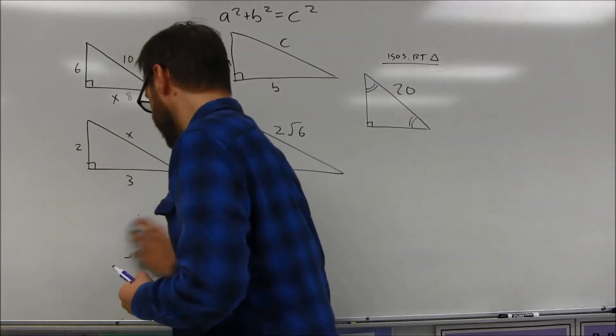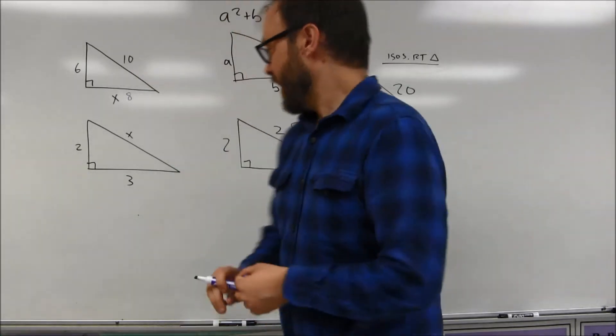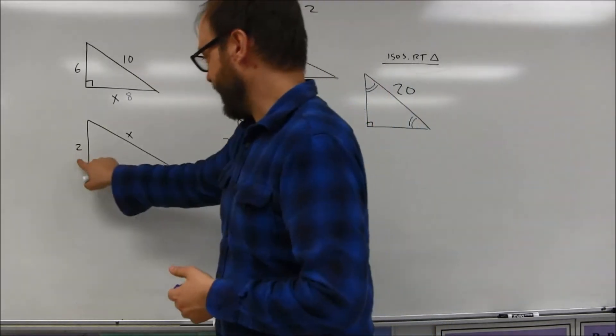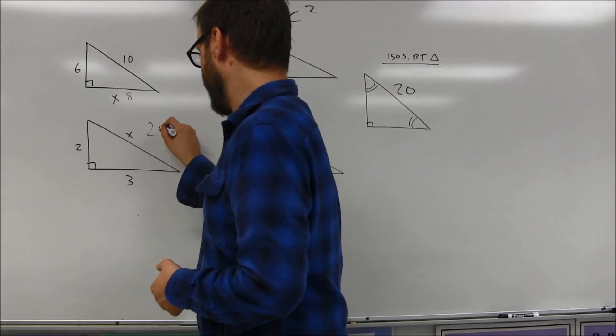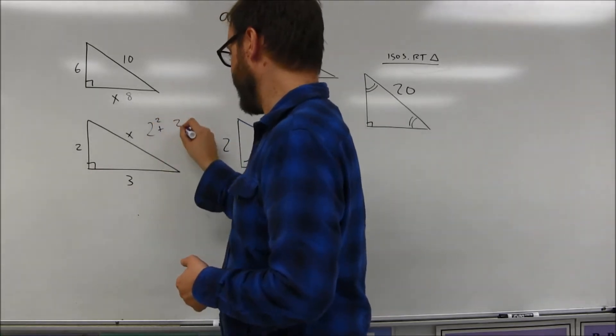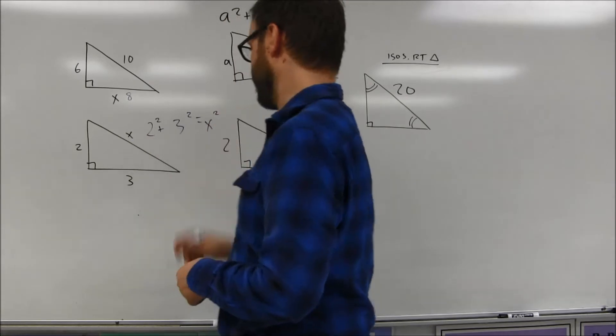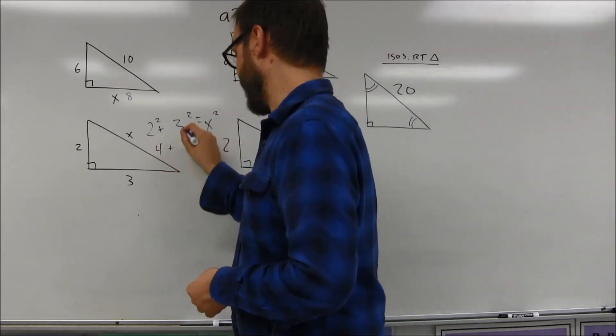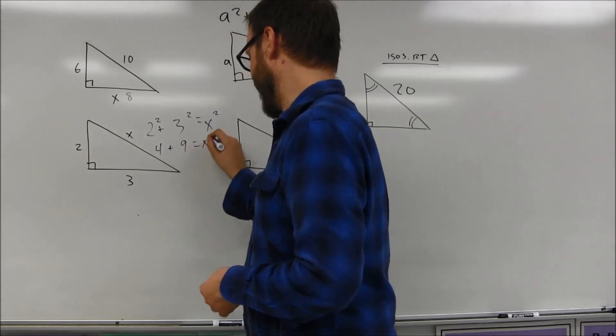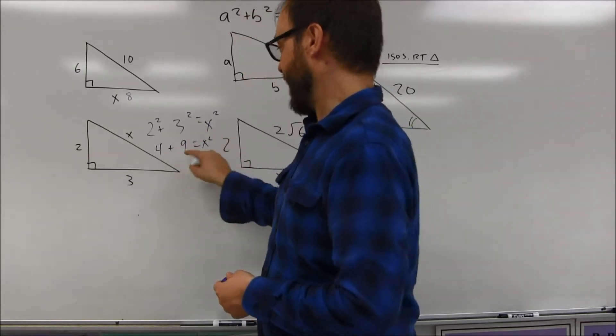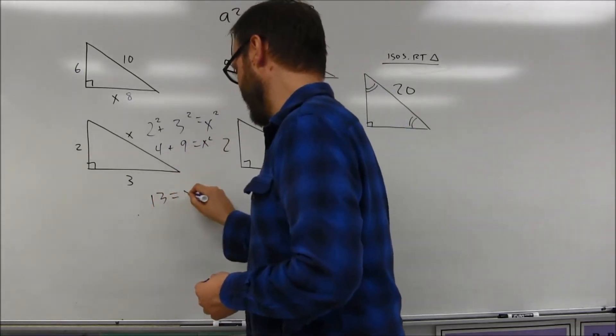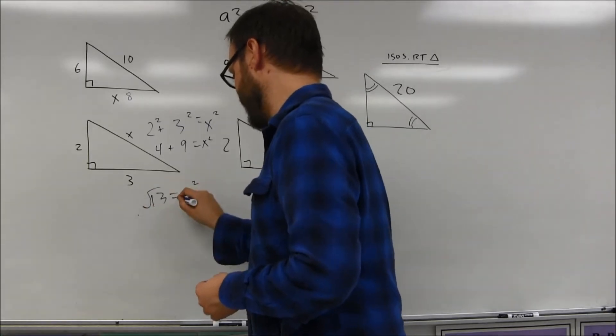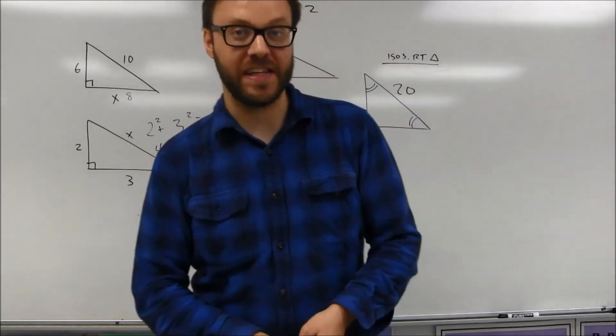Look at the second example here. Again, it's the leg squared plus the leg squared is equal to the hypotenuse squared. That's going to be 4. That's going to be 9. That's equal to x squared. In this particular case, you're going to get 13 is equal to x squared. And it turns out that x ends up being the square root of 13.